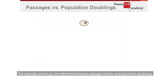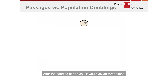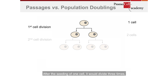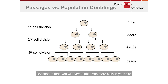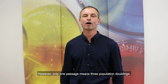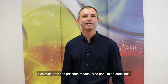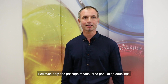This example nicely illustrates the difference between passage number and population doublings. After seeding one cell, it divides three times, giving rise to eight daughter cells — eight times more cells in the dish, indicating it's time to sub-cultivate. However, only one passage has occurred, which corresponds to three population doublings.